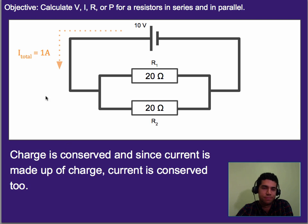Well, charge is conserved. It's a moving little particle, so it's made up of mass, and since mass is conserved, charge is conserved. And since current is made up of charge, then current is also conserved.